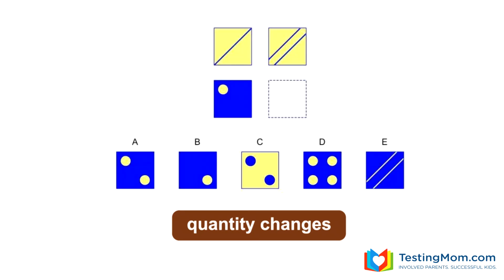Now let's look at an analogy puzzle. The rule on top is to add one of the same figure from the left to the right box. We go from one line to two lines. On the bottom, if we follow the same rule and add one of the same figures from the left to the right box, we'd go from one yellow circle to two yellow circles. So A is the answer.